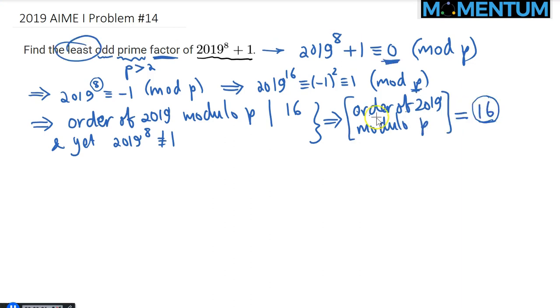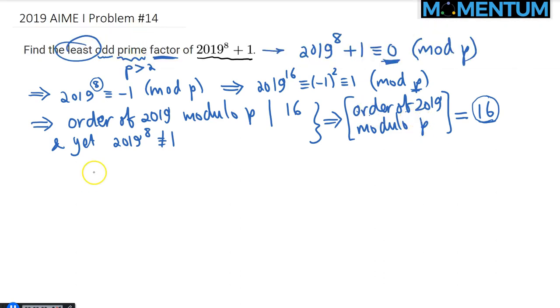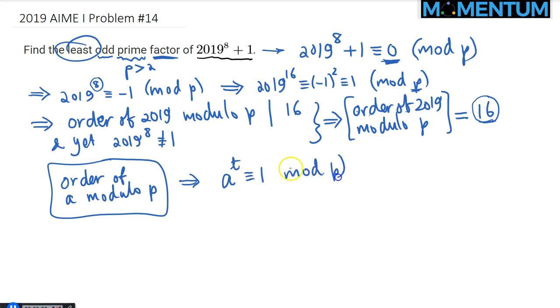Let me remind you what I mean by the order of an integer modulo P. When I say the order of A modulo any number, modulo P, what I really mean is what power, or the smallest power of A, that will make it congruent to 1 modulo P, where T is the smallest positive integer.